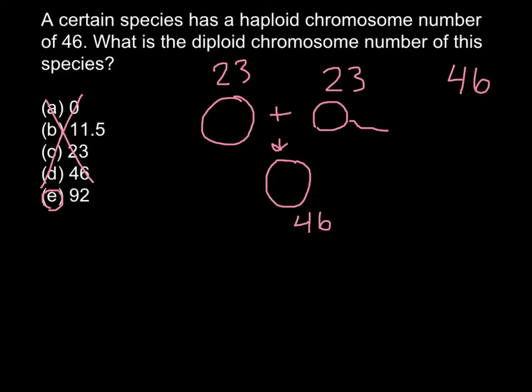And how we can solve this problem using this picture. We're told that for this particular species, the haploid number is 46. So we just cross here and we have 46. So the diploid number would be 92.